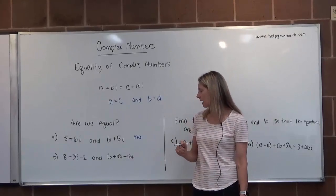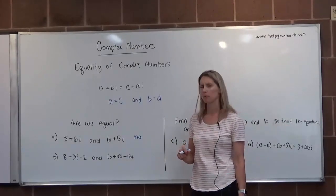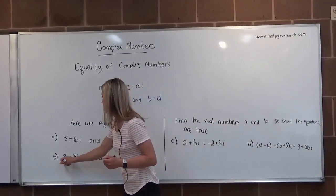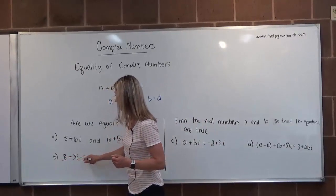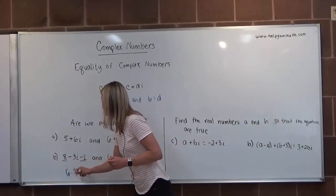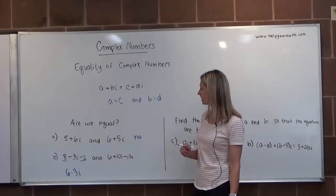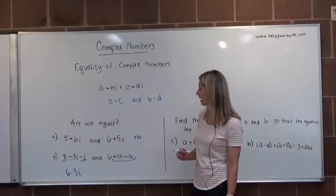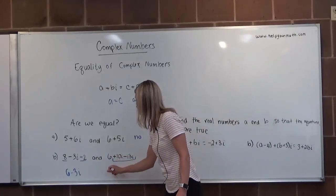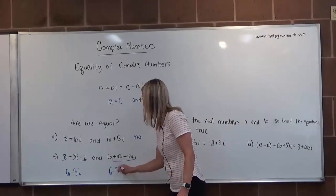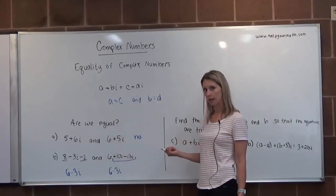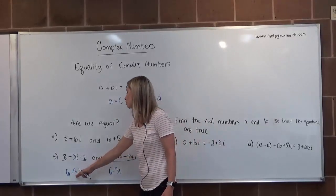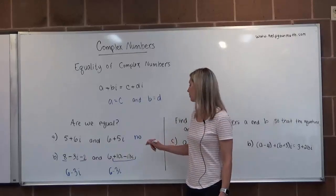In letter B we have 8-3i-2. That number's not quite in standard complex form yet, so let's rewrite it. We have 8 and -2, so it would be 6-3i. And then here we have 6+10i-13i. These are like terms: 10i take away 13i leaves me with -3i, so it would be 6-3i. Are those two complex numbers equal? The real parts are both 6, and the complex coefficients are both -3, so yes, these two numbers are equal.